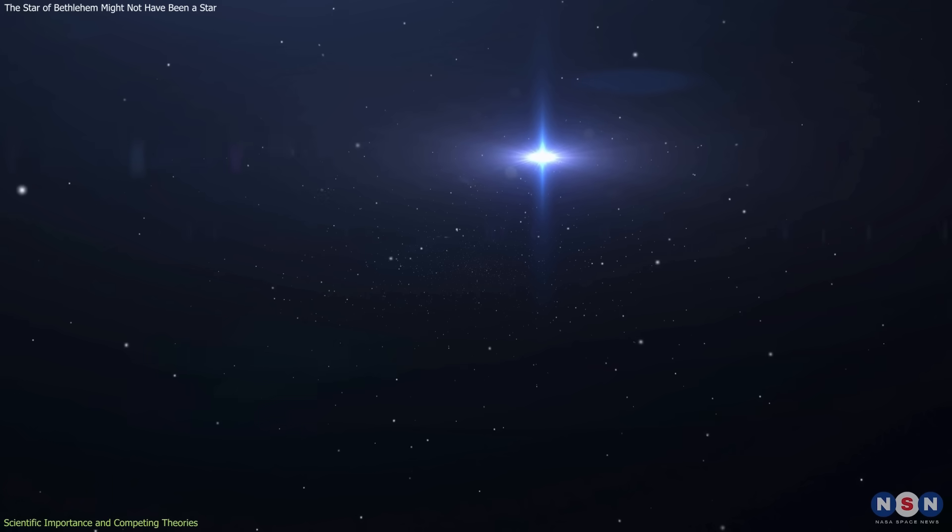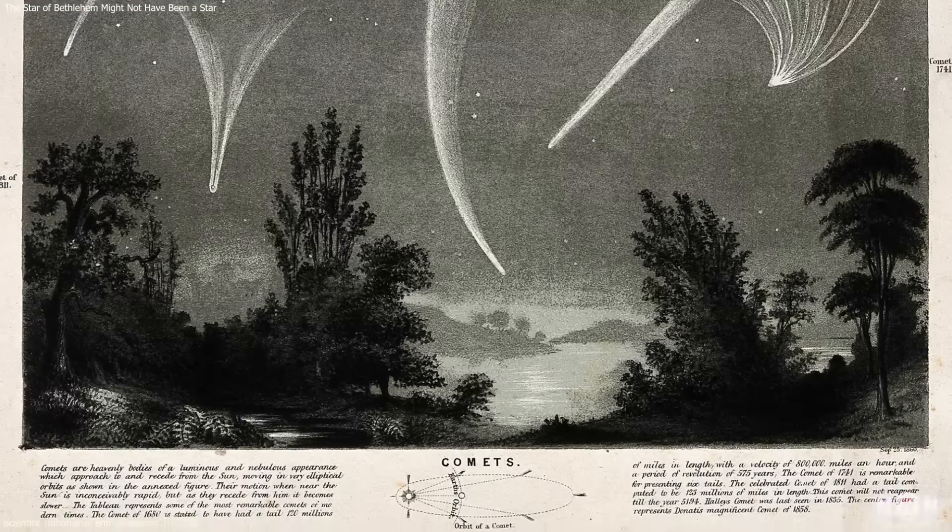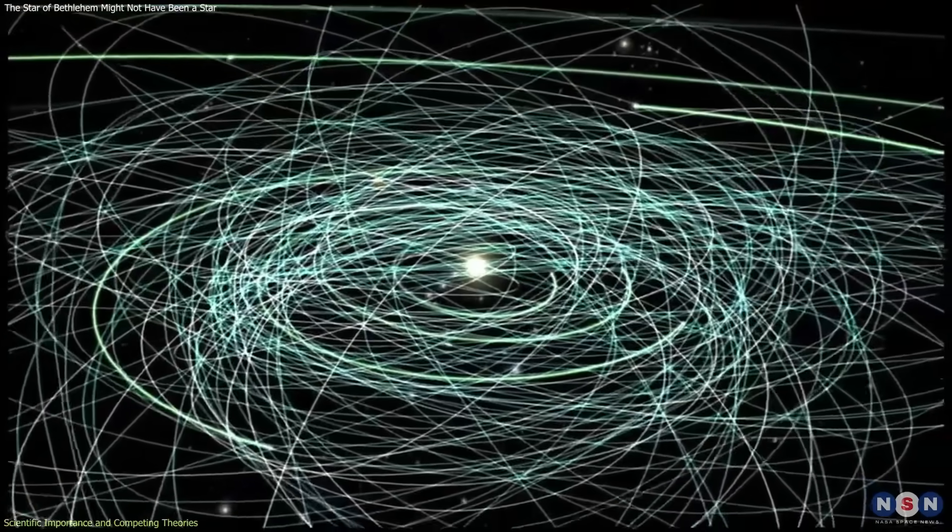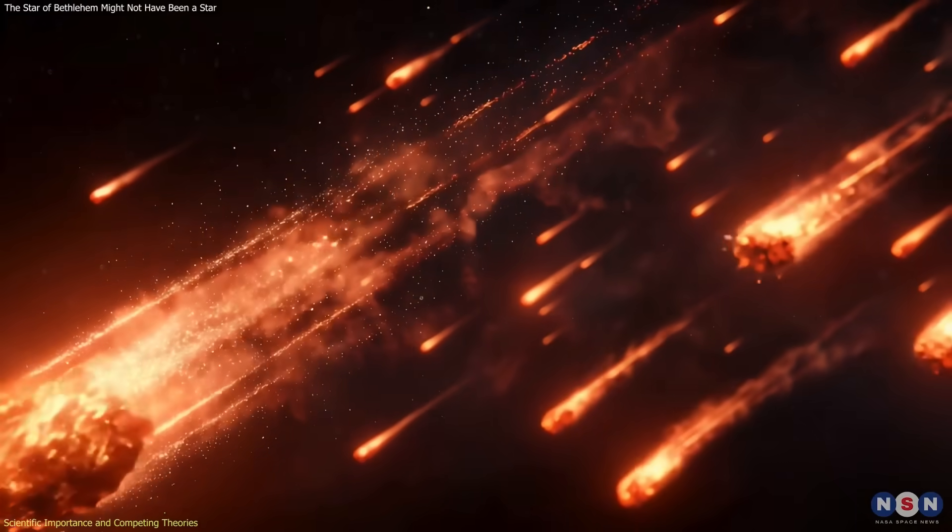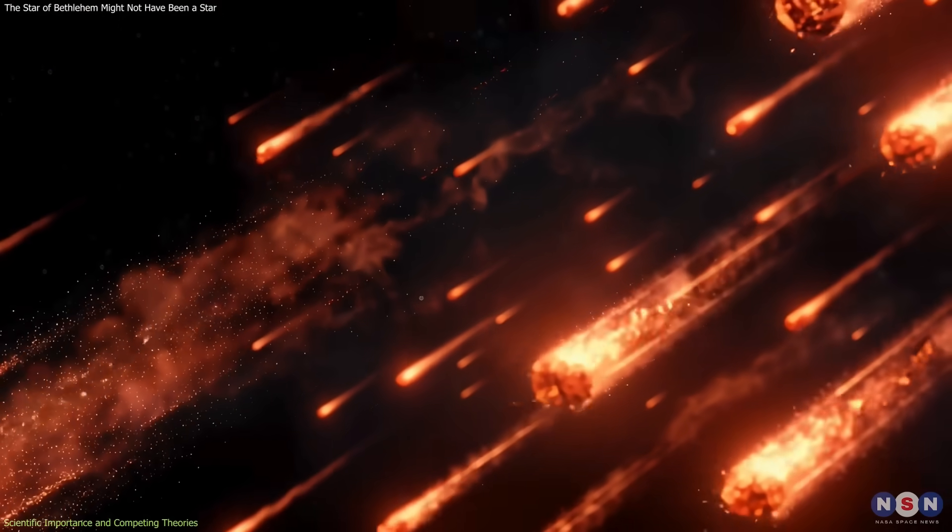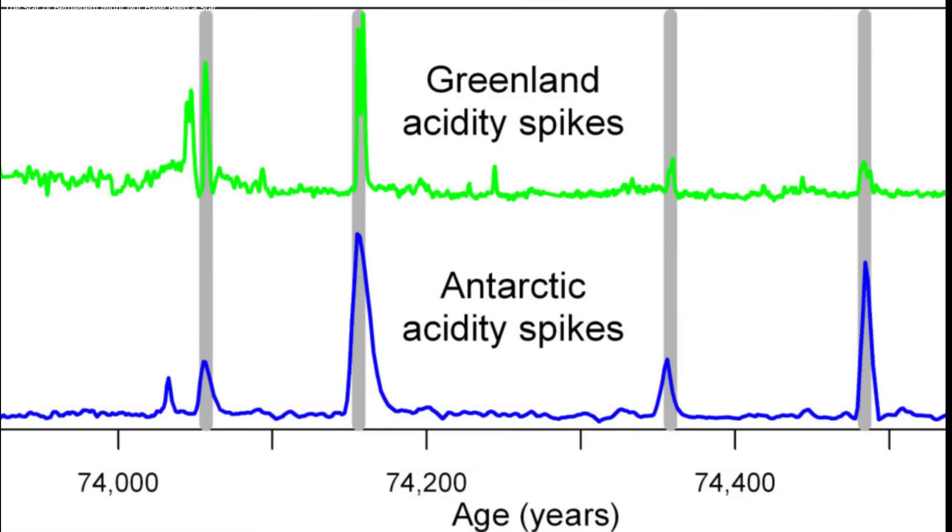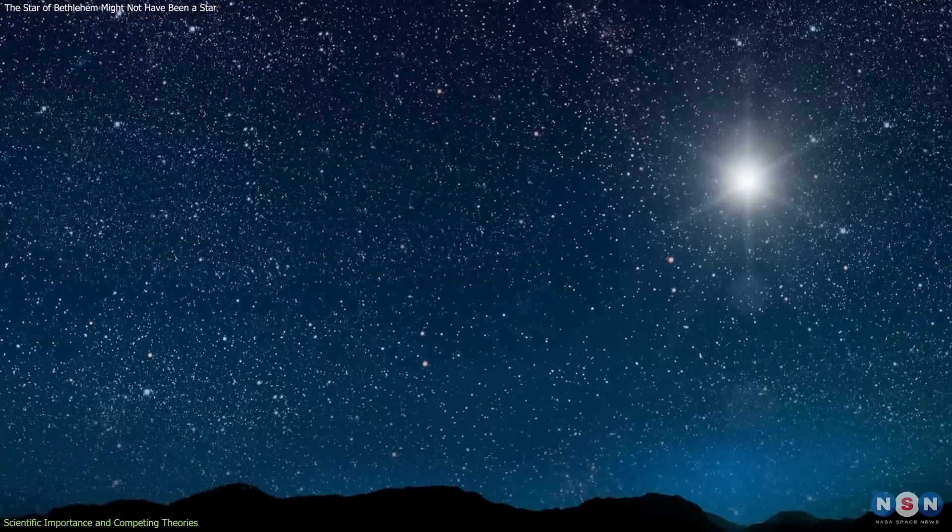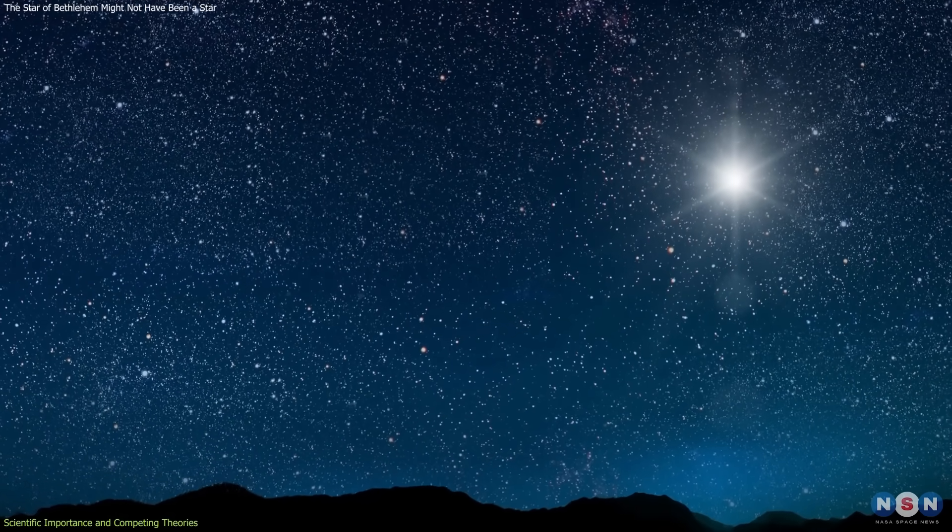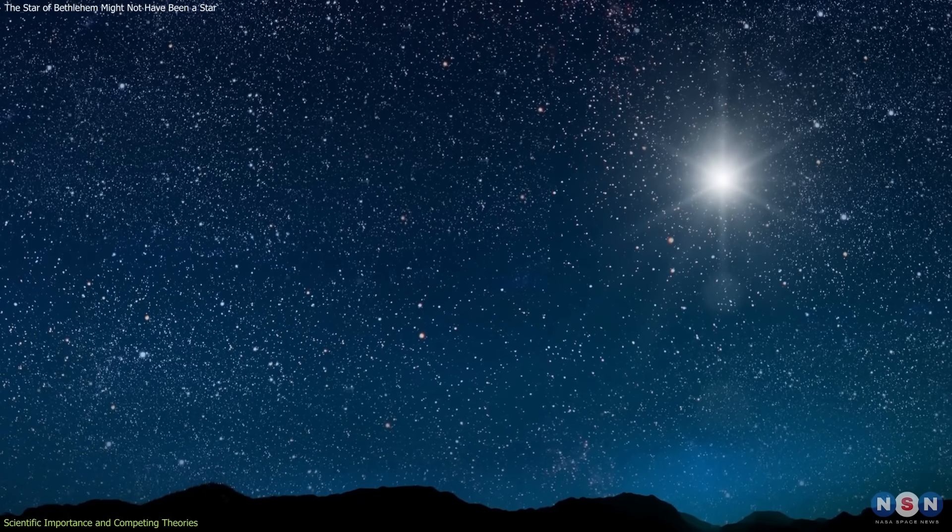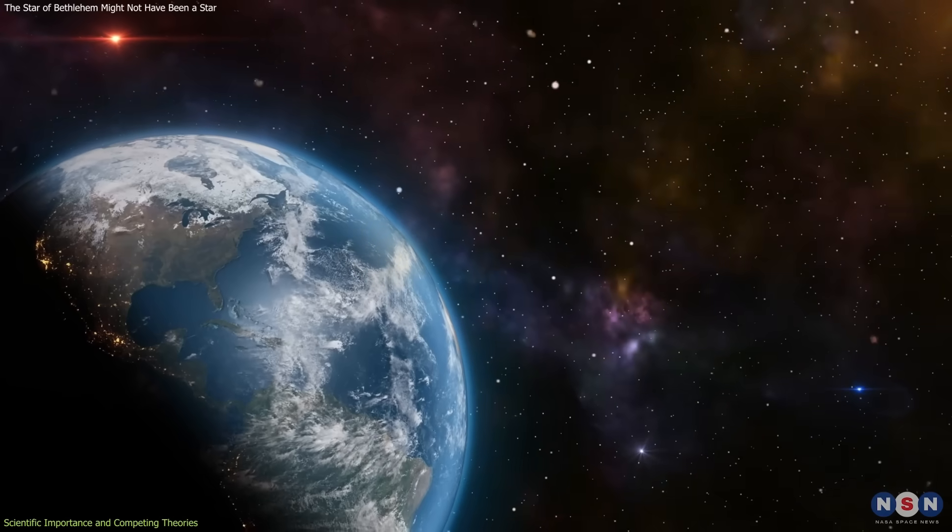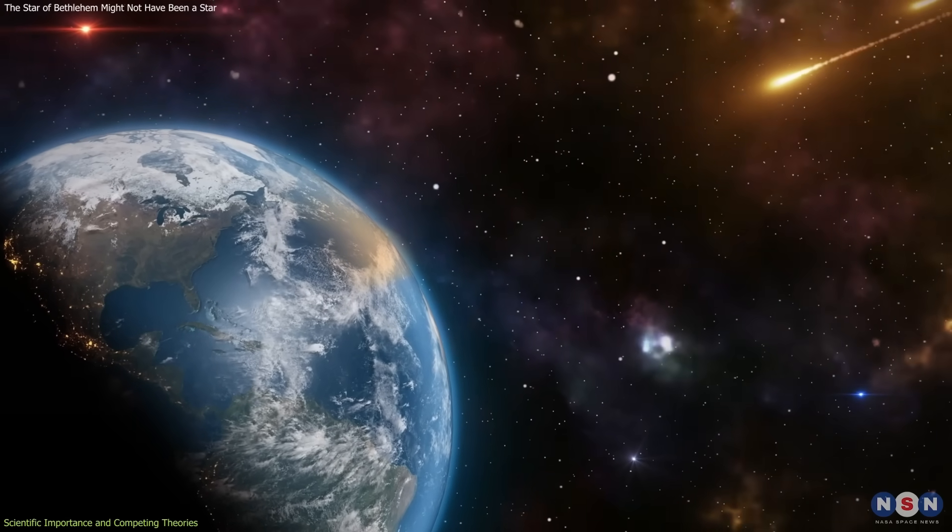Future progress depends on interdisciplinary work. Historians may uncover overlooked records. Astronomers can refine orbital simulations. Geoscientists may search for subtle physical signatures in Earth's geological archives. Each field contributes a different angle to the same question. Even if no definitive answer is ever found, the process itself is informative. It shows how science approaches ancient mysteries, not by dismissing them, but by testing what nature allows.